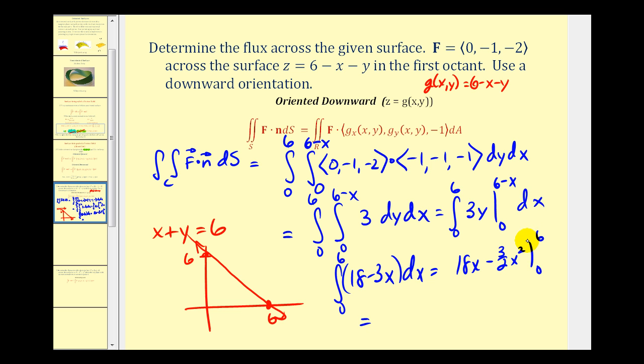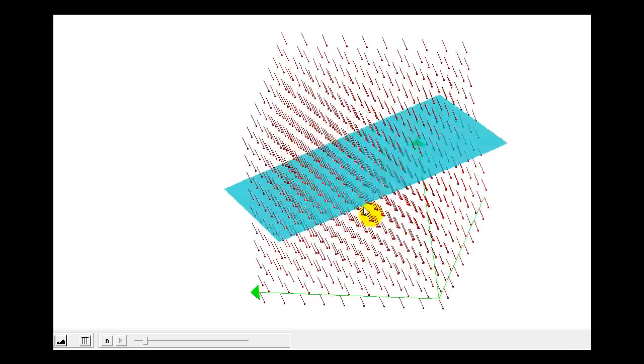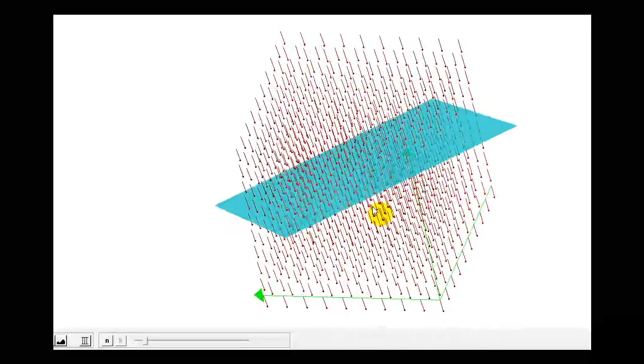So we're going to have eighteen x minus three halves x squared. Subbing in six for x, we'll have eighteen times six minus three halves times six squared all minus zero. This is going to give us one oh eight minus fifty-four, which is fifty-four. And again, we can view that value of fifty-four as the flow rate of the rain on the given roof.